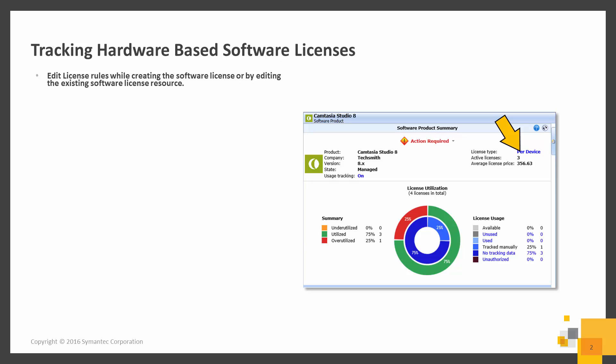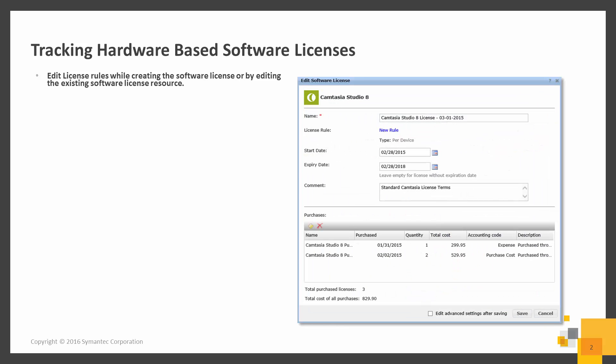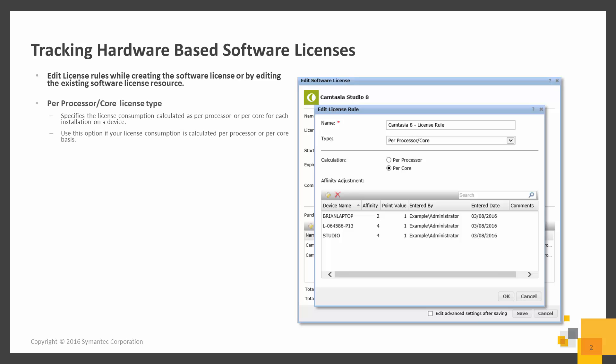You are then able to edit the specific license you want to modify. Once you are in the Edit License page, you can select the License Rule link to edit or create the rule. The Per Processor Core License Type specifies the license consumption calculated as per processor or per core for each installation on a device. You may use this option if the license consumption is calculated per processor or per core.